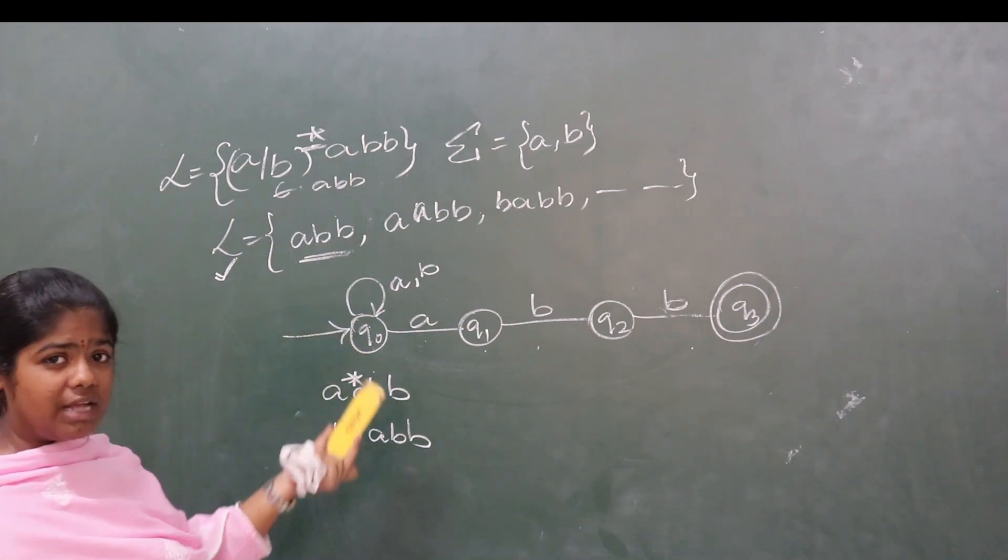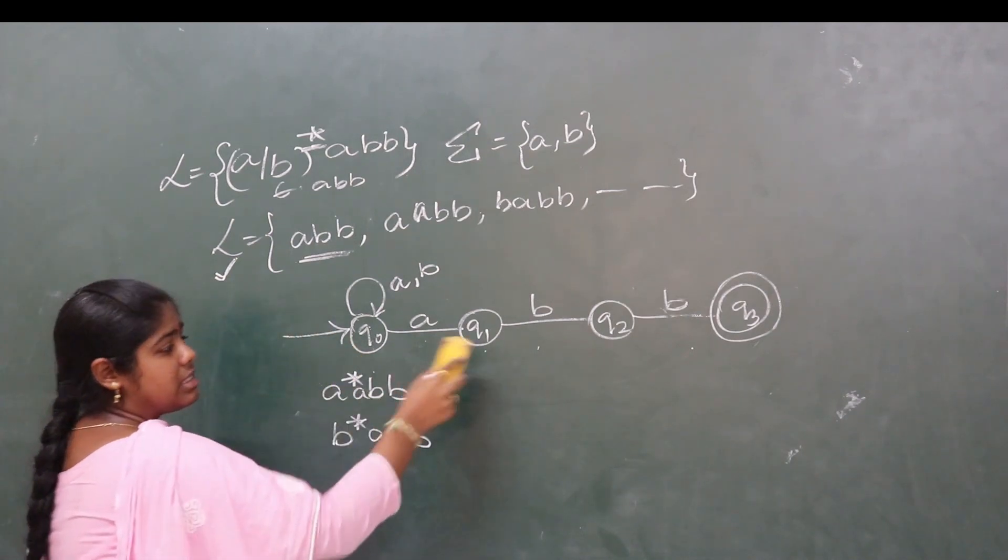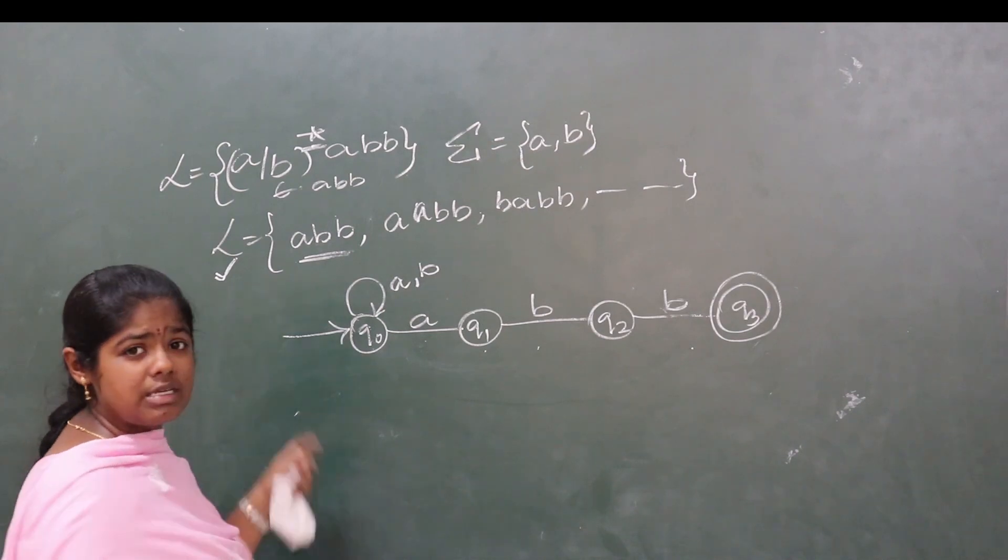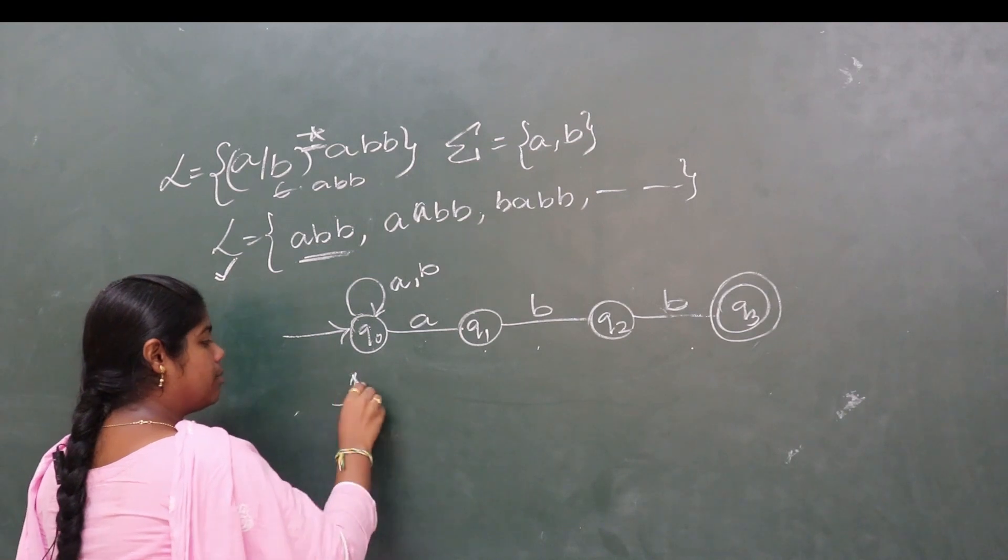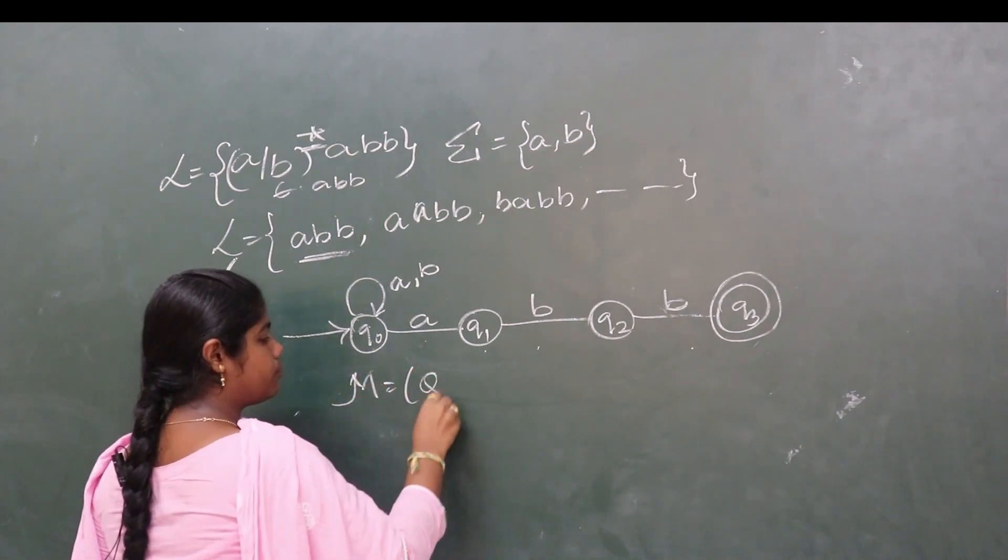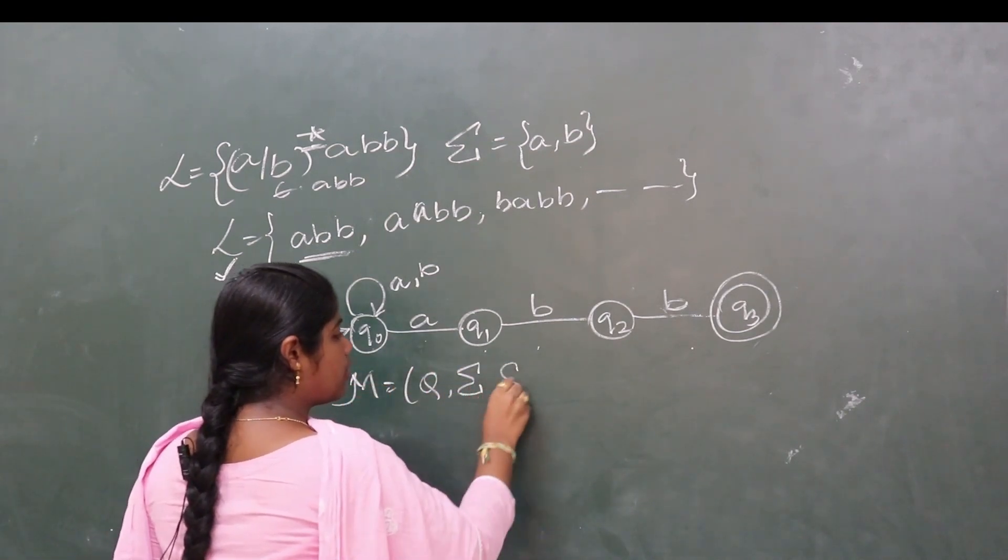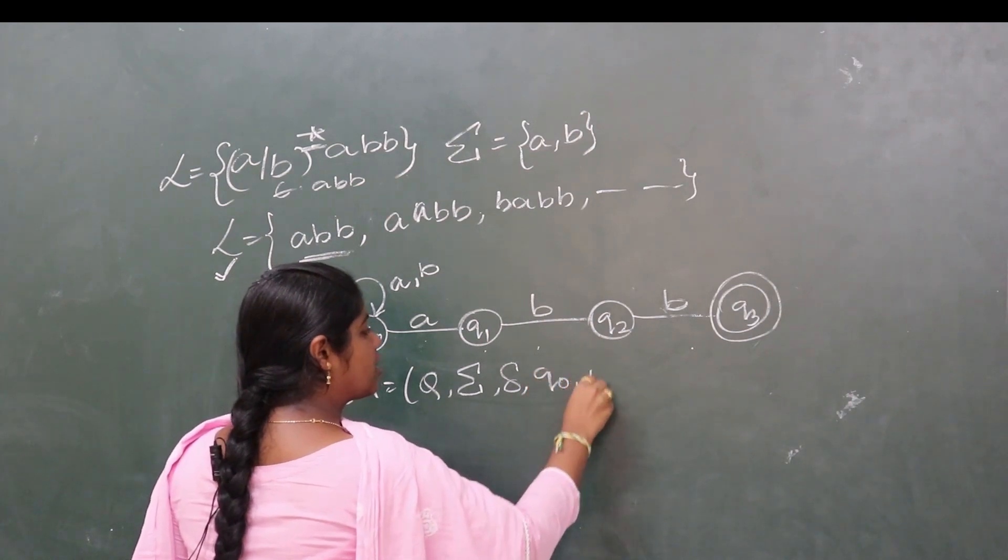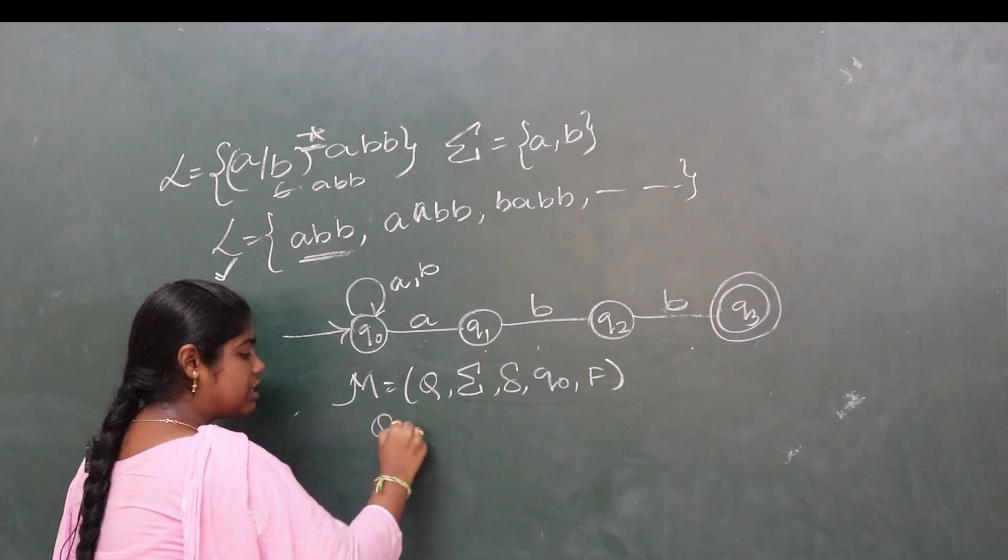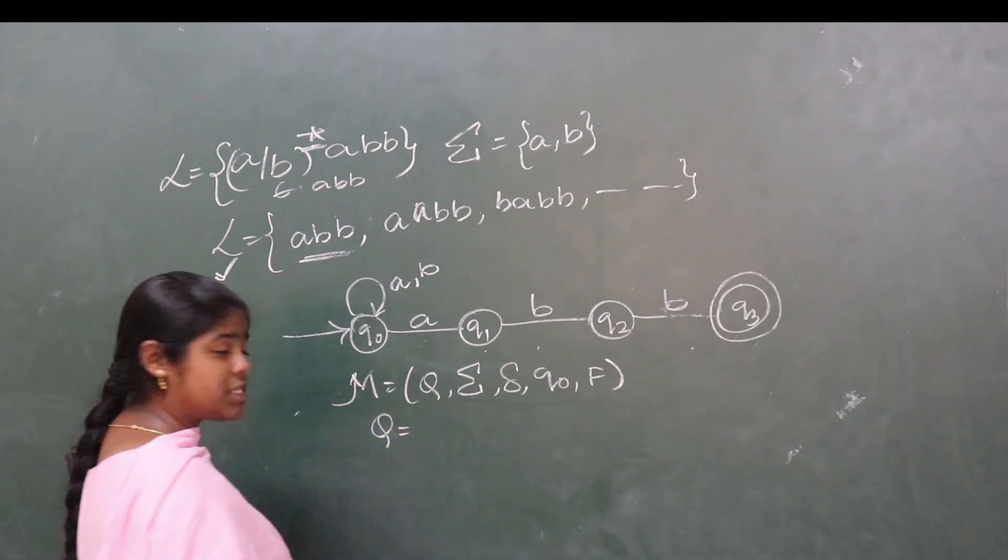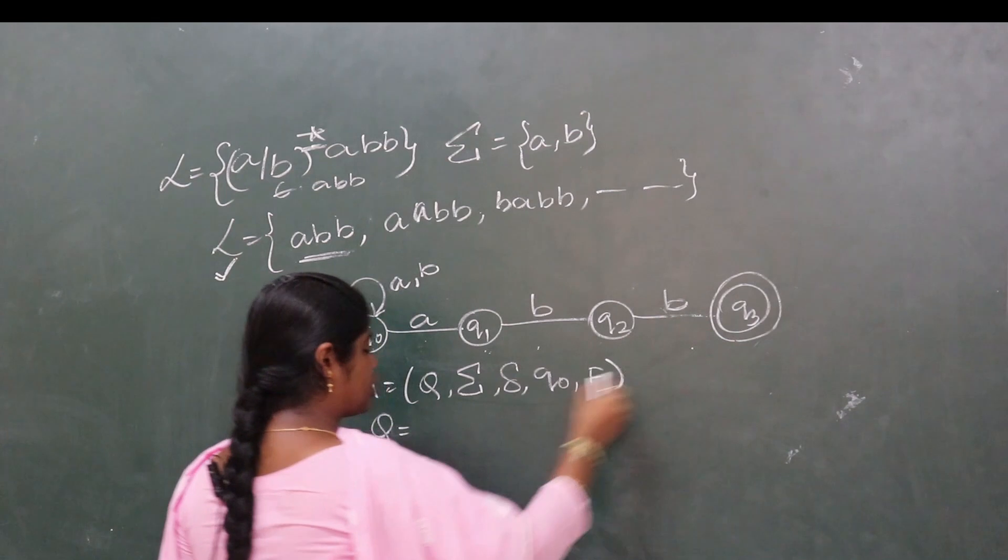This is the NFA constructed using this language. Now write the remaining 5-tuples. Machine M equals Q, sigma, delta, Q0, F. Q is the set of states: Q0, Q1, Q2, Q3.